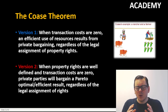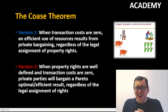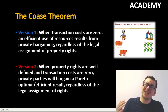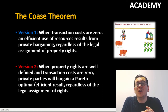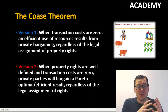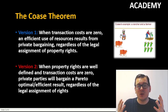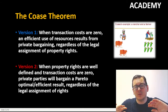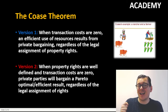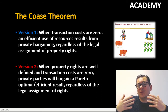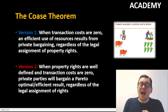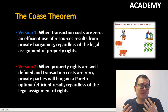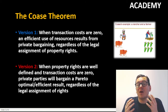Coase's case is about a rancher and a farmer, where the cattle from the rancher goes into the farmland and destroys the crops that the farmer needs to provide for his family and to gain wealth. If we turned to the Pigouvian approach, we would say that the cattle rancher is enforcing a negative externality on the farmer, and we would regulate him — perhaps by taxing him or finding some other kind of regulation.